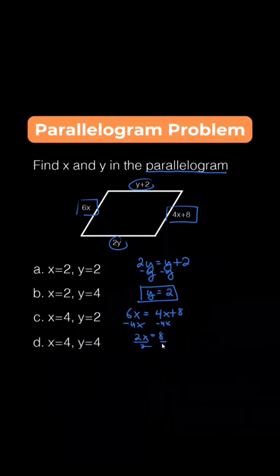Multiply 1 half or divide 2 both sides and we obtain x equals 4. So we have found x and y, which is x equals 4 and y equals 2, so letter c. Thank you.